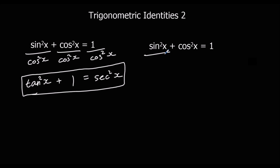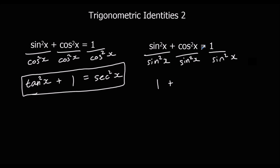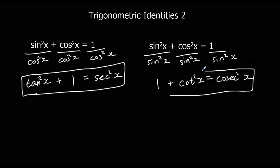Then we're going to do the same thing but divide by sin²x, so each term is divided by sin²x. Sin over sin — anything divided by itself — is 1. Cos²x over sin²x: cos over sin gives us cot, so we've got cot²x. And 1 over sin²x — that's cosec²x.